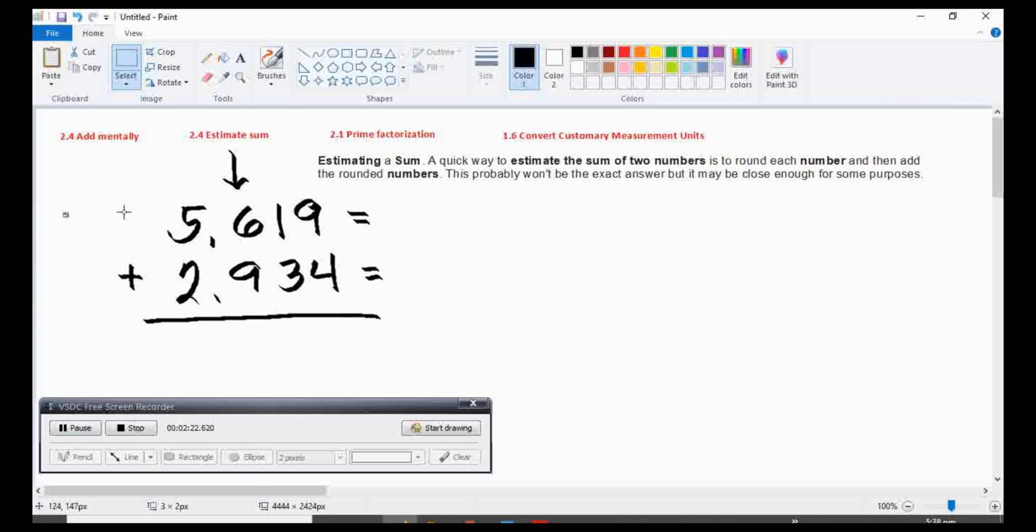Example: I have 5,619 added to 2,934. In order for you to round this one, let us round the numbers to the greatest place value. The greatest place value is 5, followed by 6. So therefore, 5,619 will be rounded up to 6,000. The other addend is 2,934. The greatest place value here is 2,000, followed by 9. So 2,000 will be rounded up and it will become 3,000.